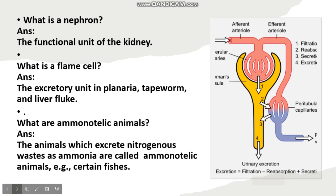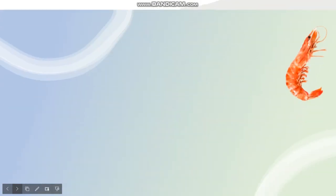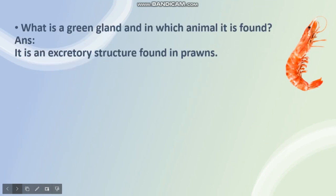What are aminotelic animals? The answer is the animals which excrete nitrogenous waste as ammonia are called aminotelic animals. Example: certain fishes. What is a green gland and in which animal is it found? The answer is it is an excretory structure found in prawns.